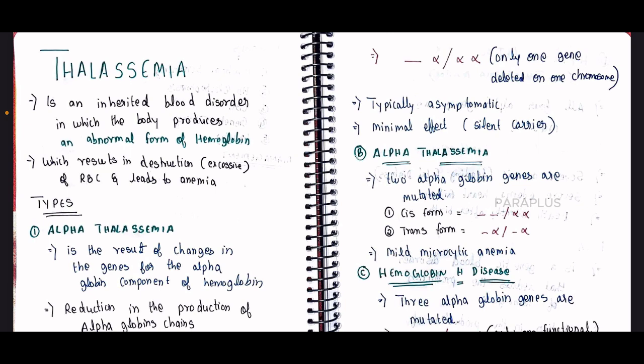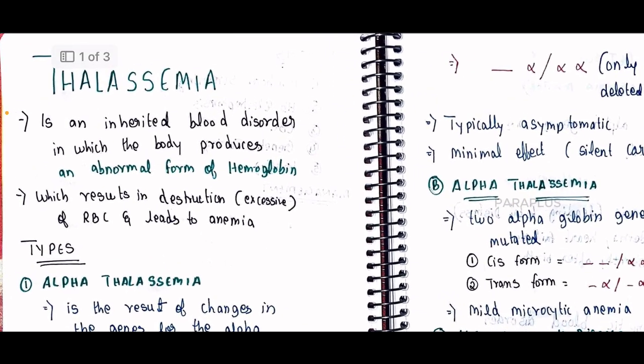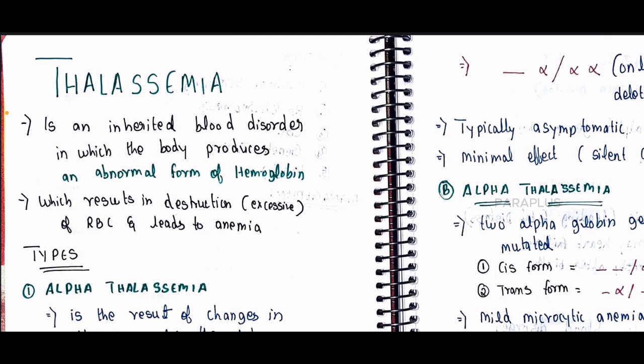Thalassemia is a blood-related disorder. It is an inherited blood disorder in which the body produces an abnormal form of hemoglobin. This is a gene-related problem — an inherited blood disorder where body hemoglobin molecules are abnormal.